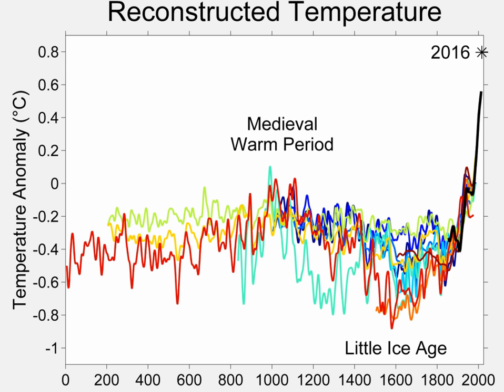A similar formula applies for delta-D; delta values for precipitation are always negative. The major influence on delta is the difference between ocean temperatures where the moisture evaporated and the place where the final precipitation occurred. Since ocean temperatures are relatively stable, the delta value mostly reflects the temperature where precipitation occurs. Taking into account that the precipitation forms above the inversion layer, we are left with a linear relation: delta-18-O = aT + b. This is empirically calibrated as 0.67 per mil per degree Celsius for Greenland and 0.76 per mil per degree Celsius for East Antarctica.